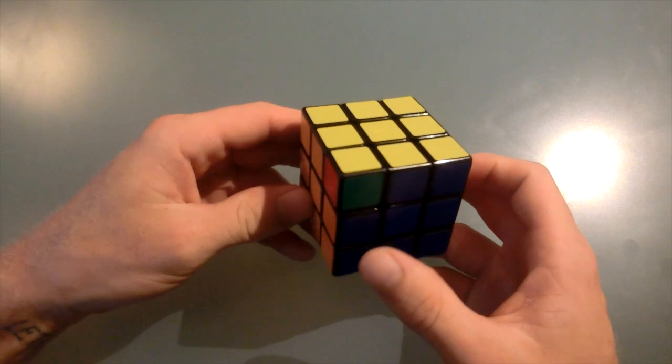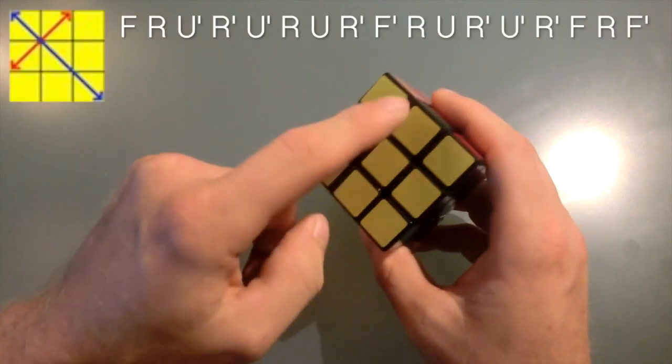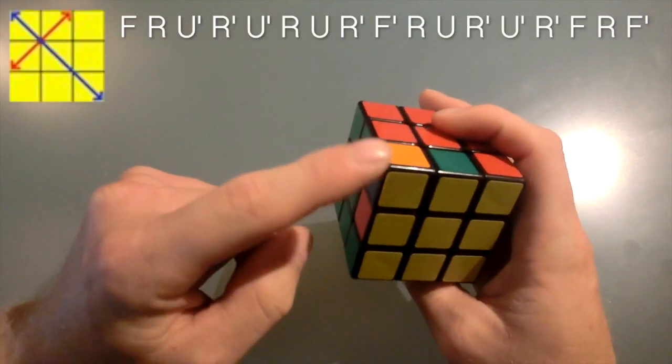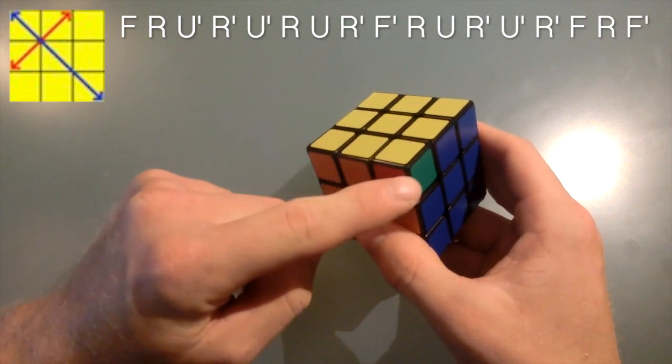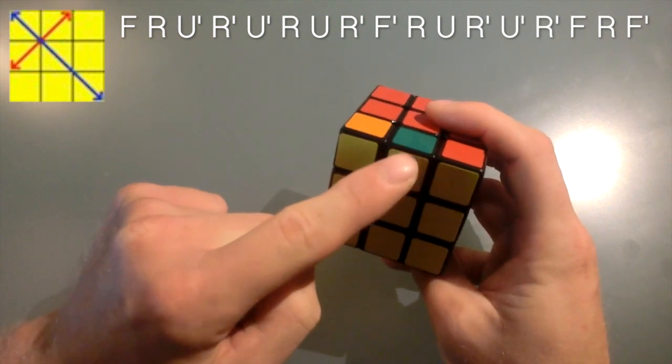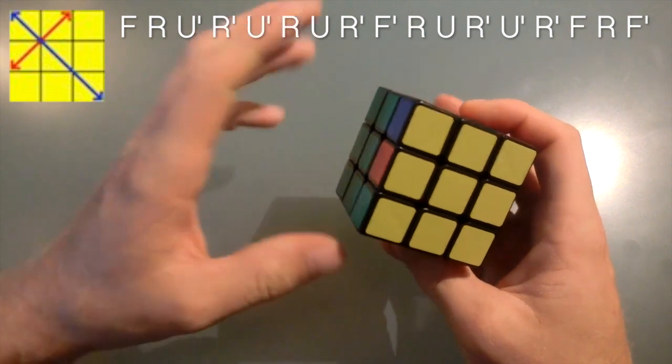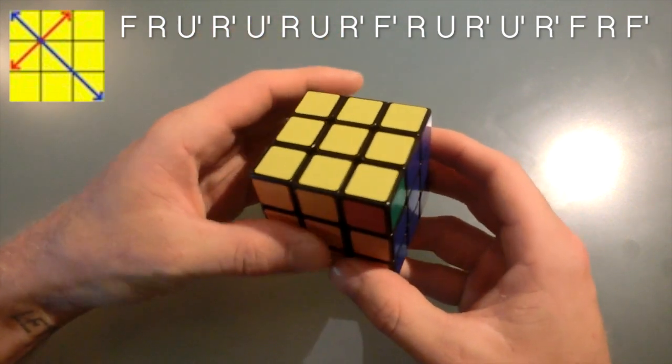Okay, the next algorithm we're going to look at is called a Y permutation and that's because it kind of looks like a Y where this corner piece gets swapped with this corner piece and this edge gets swapped with this edge and this is what it looks like at regular speed.